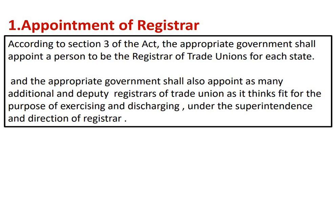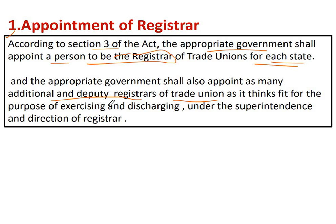पहला है appointment of registrar। According to Section 3 of the Trade Union Act 1926, the appropriate government shall appoint a person to be the registrar of trade union for each state. The appropriate government shall also appoint as many additional and deputy registrars of trade union as it thinks fit — एक main registrar appoint होता है और साथ में additional और deputy registrar भी appoint किए जा सकते हैं।